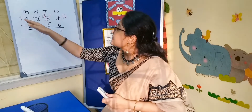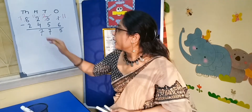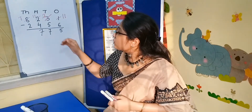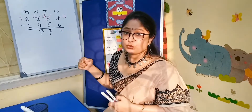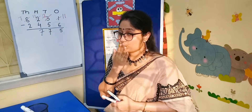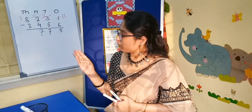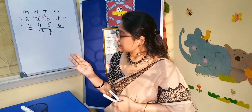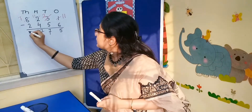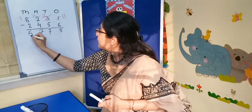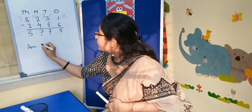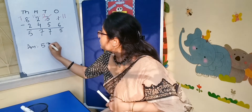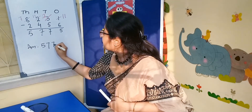Now it is 7 on the top and 2 on the floor. So we count from 2 to 7: 2, 3, 4, 5, 6, 7 — that is 5. So the answer is 5,775.